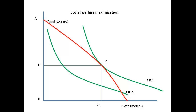Let us return to consider the production of two goods — our old friends cloth and food. The point OA is where all resources are used to produce the maximum amount of food, and OB is the point where we produce the maximum amount of cloth. The curve AB is the production possibility frontier. The slope of AB represents the rate we can turn production of food to cloth — the marginal rate of transformation. All the production possibilities are along the line AB.